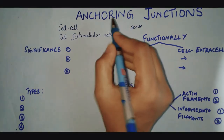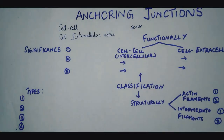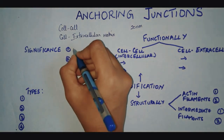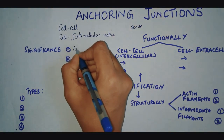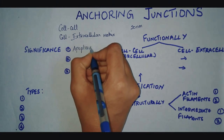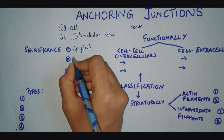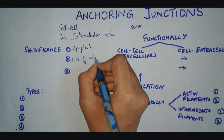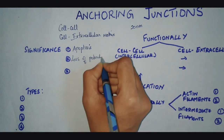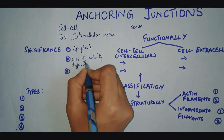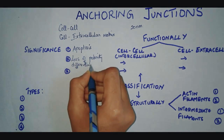Why are anchoring junctions important? What is their significance? If the anchoring junctions are lost, the cells can result in apoptosis, or there can be loss of polarity resulting in differentiation of the cell, or there can be an increase in cell proliferation.